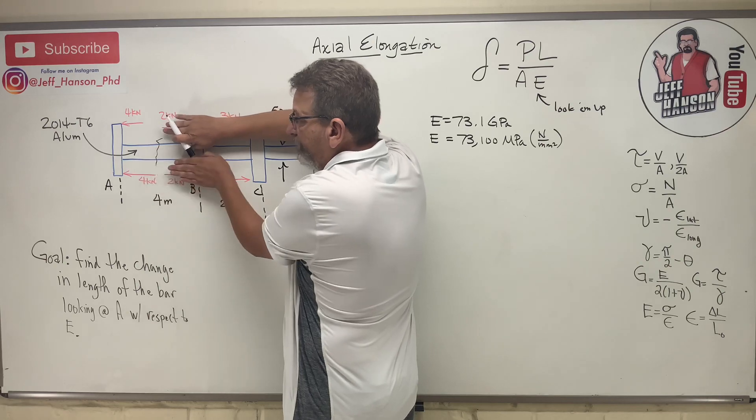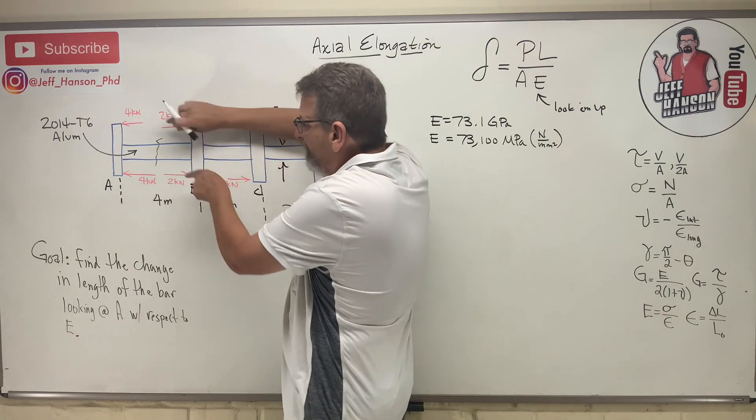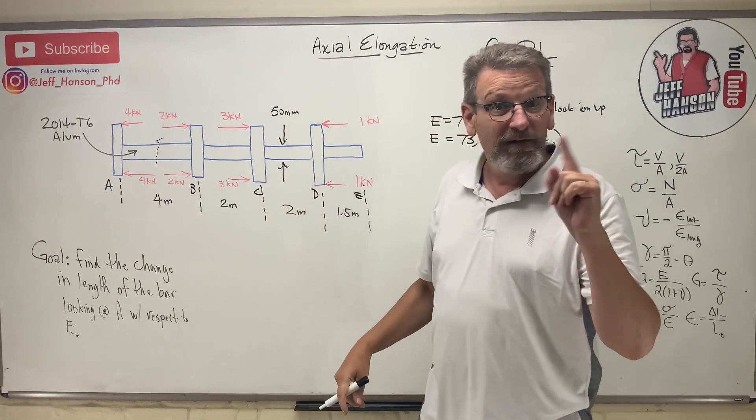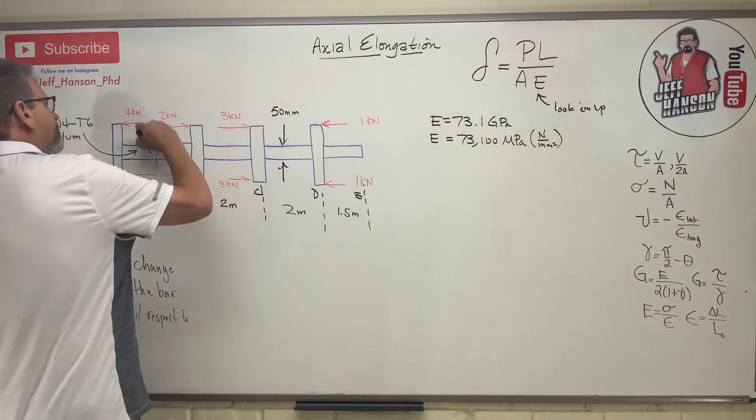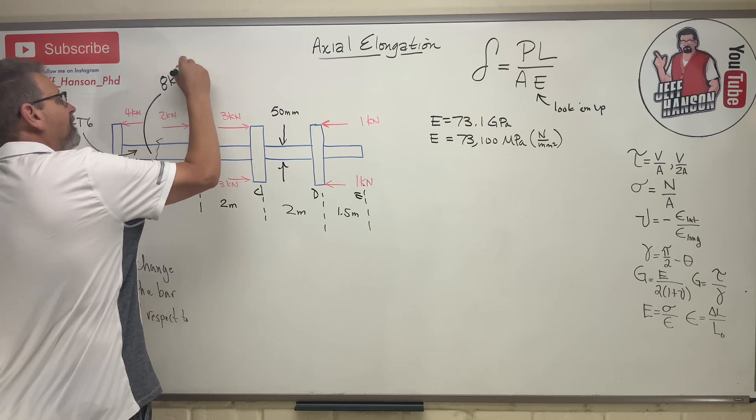Let's ignore everything over here. What is in that shaft? Eight kilonewtons going that way - four and four - eight going that way. So this section of the shaft is in tension. This section has eight kilonewtons tension.